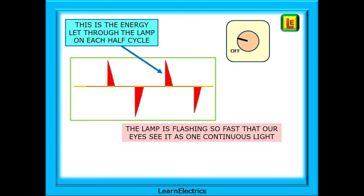If we remove the input cycle from the drawing, we can see more clearly the energy that is being let through the lamp on each half cycle. Not a lot of current at this minimum setting, but this is happening 100 times a second, once every 10 milliseconds. The lamp is flashing so fast that our eyes join up the bursts of energy. We don't see lots of flashes—they are seen instead as one continuous stream of dimmed light.